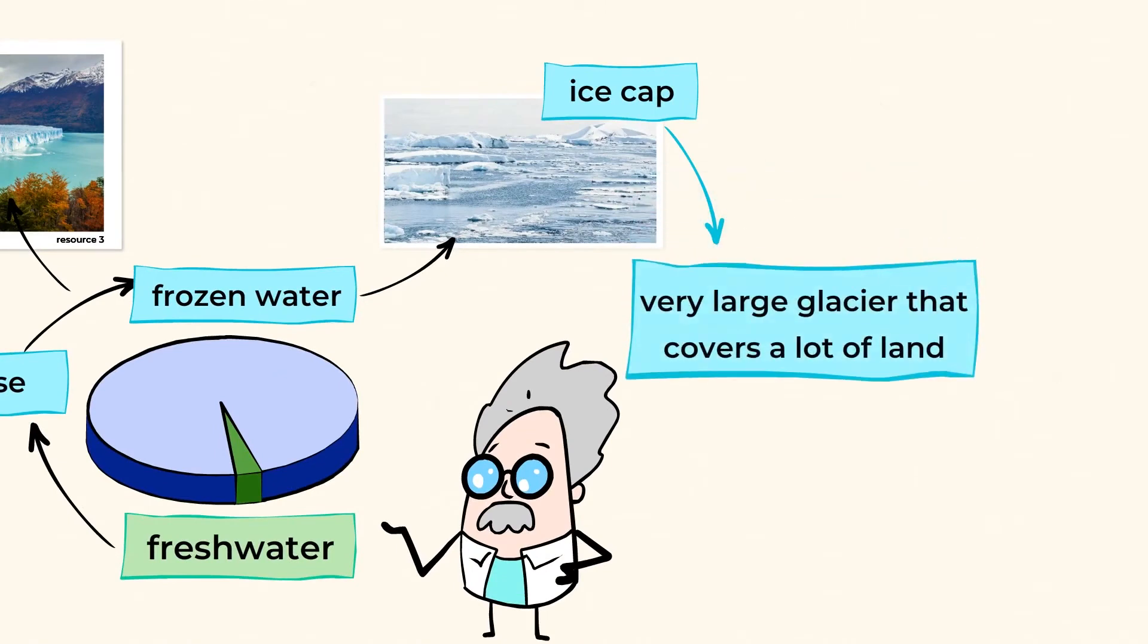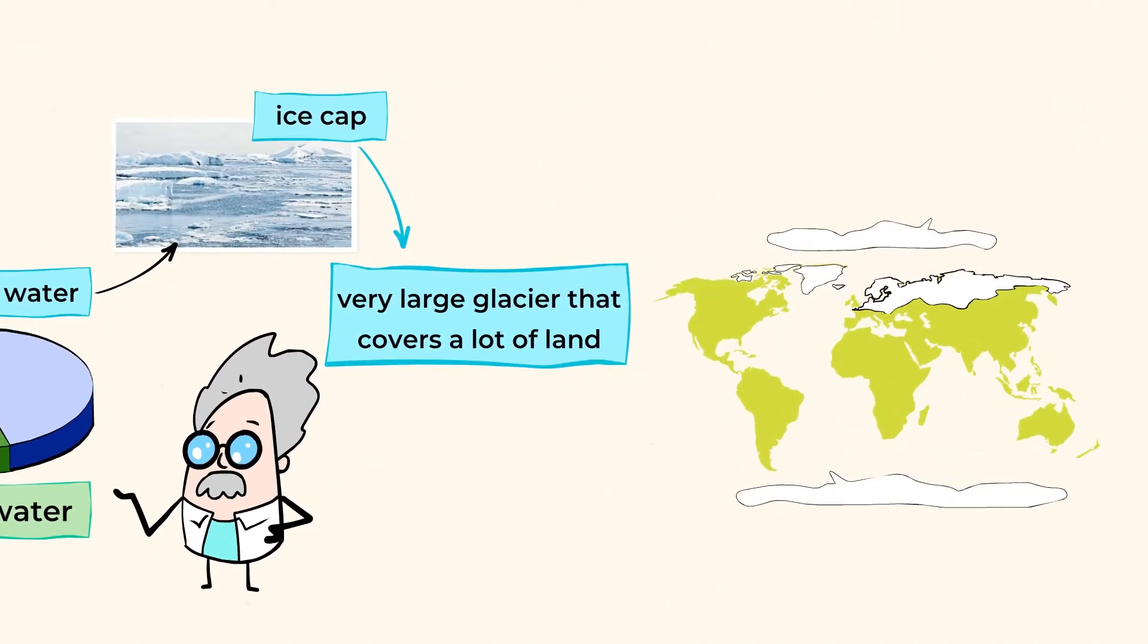And an ice cap is a very large glacier that covers a lot of land. You can imagine that this type of frozen water is found in very cold parts of the Earth, closer to the North and South Poles.